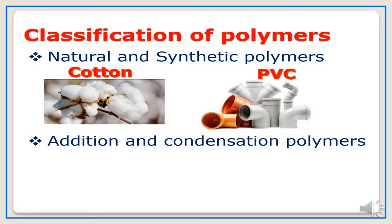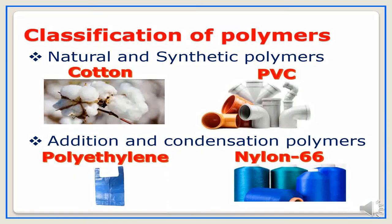The second way of classification is addition and condensation polymers, based on the mode of synthesis. Addition polymers are formed by simple addition of monomers of identical or different chemical structure without elimination of a by-product. Condensation polymers are formed by stepwise condensation reaction between monomers. For example, polyethylene is an addition polymer where ethylene is the monomer. Nylon-66 is a condensation polymer formed by stepwise condensation reaction between hexamethylene diamine and adipic acid.